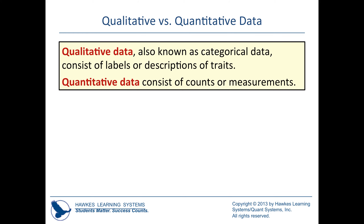Qualitative data is known as categorical data — it consists of labels and descriptions of traits. Quantitative data consists of counts or measurements.